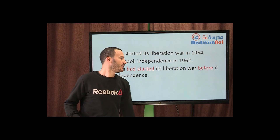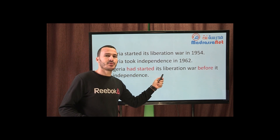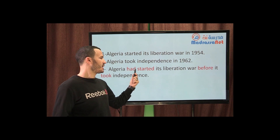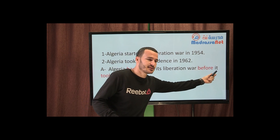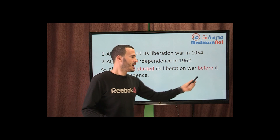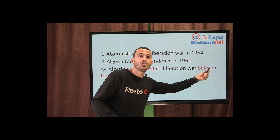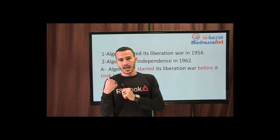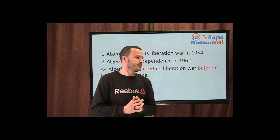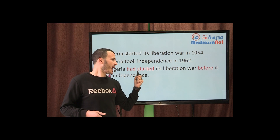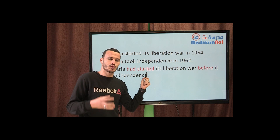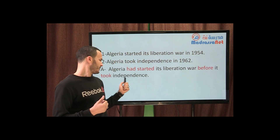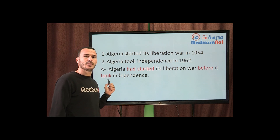Using 'before': Algeria had started its liberation war before it took independence. Event number one is 'Algeria had started its liberation war'; event number two is 'it took independence.' In between these two clauses, I use the conjunction 'before' to show these events took place one after another. The first event uses the past perfect — 'had started' — to stress that event one had taken place before event two. Event two uses the past simple — 'took'.